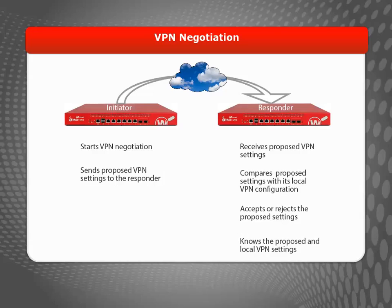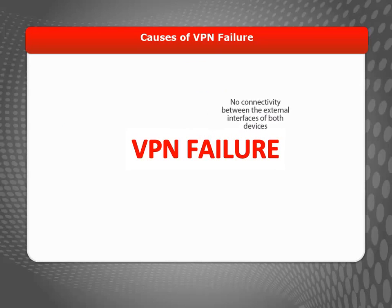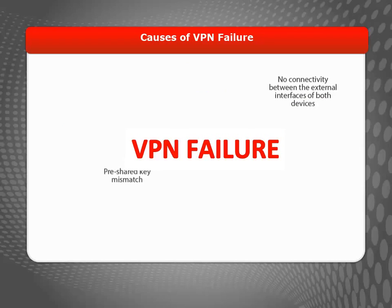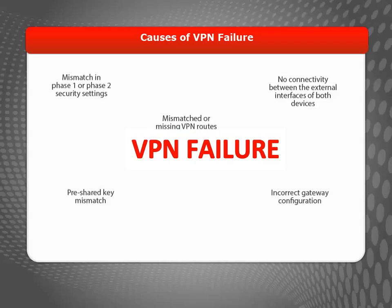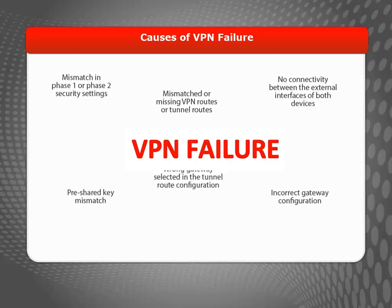Only the responder knows both the proposed and local VPN settings, so the VPN diagnostic messages on the responder contain more detailed information useful for VPN troubleshooting. Branch office VPN tunnels require a reliable connection, matching VPN configuration settings, and policies to allow traffic through the tunnel. VPN negotiations can fail for a variety of reasons. Here are some of the more common ones.